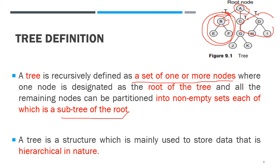What is the purpose of the tree data structure? It is used to store data that is hierarchical in nature. The root node is attached to child nodes, and the children are arranged in a hierarchical manner. Tree data structure is used to store hierarchical data.